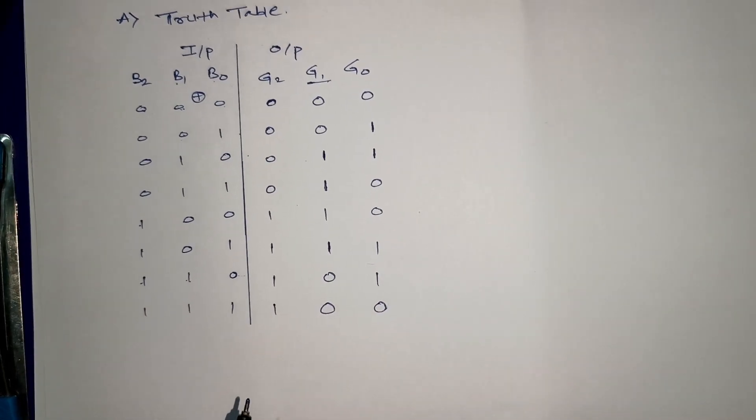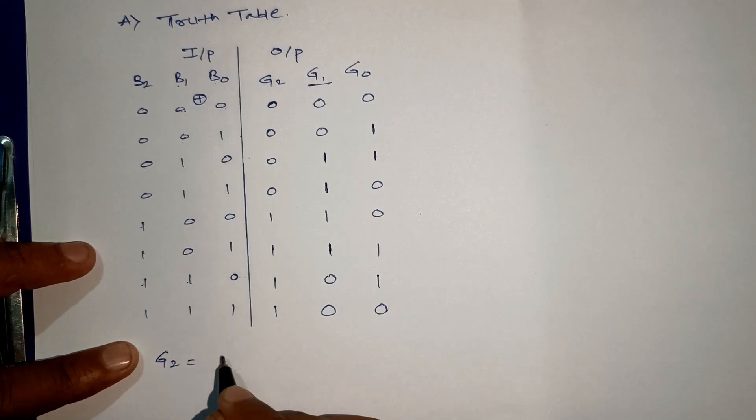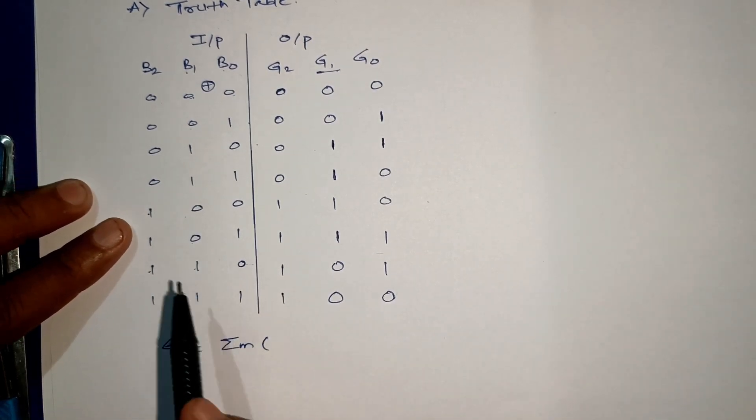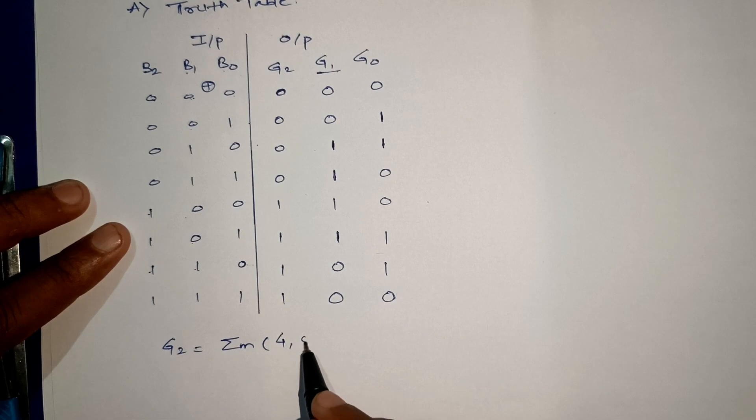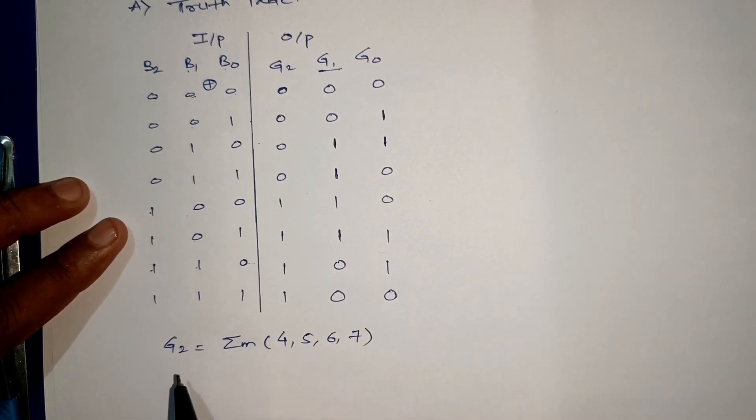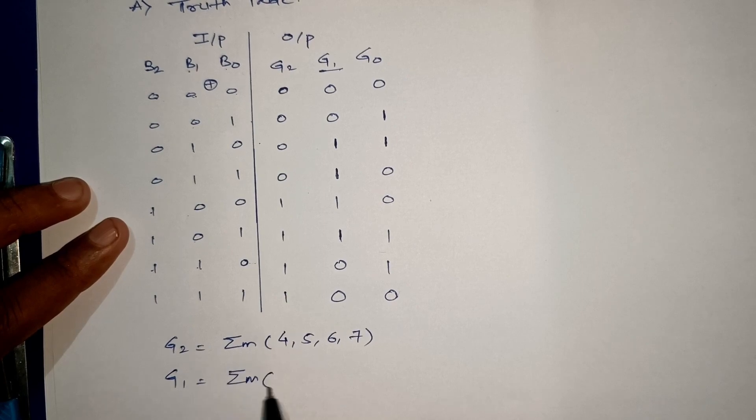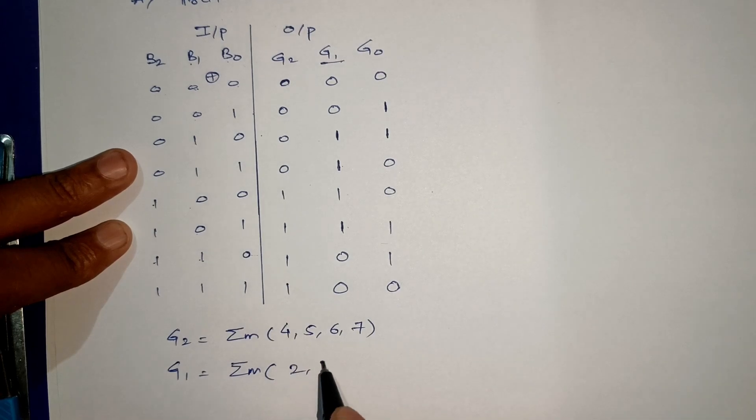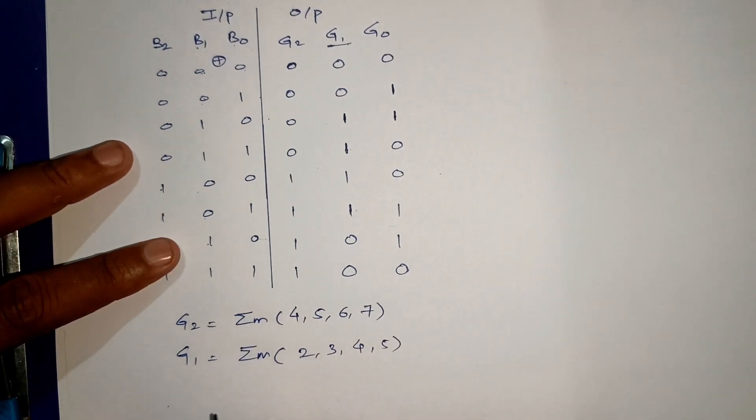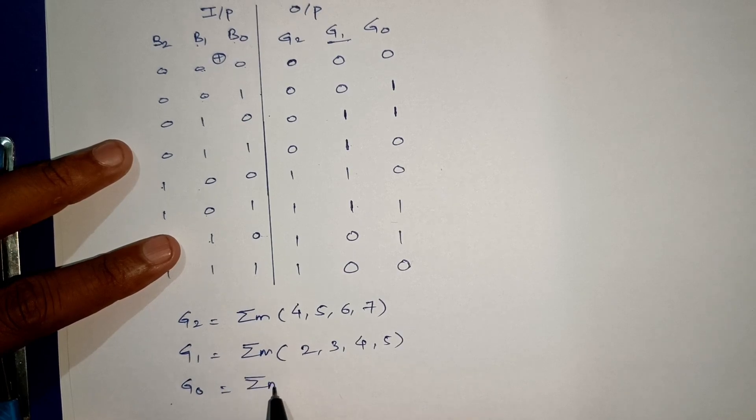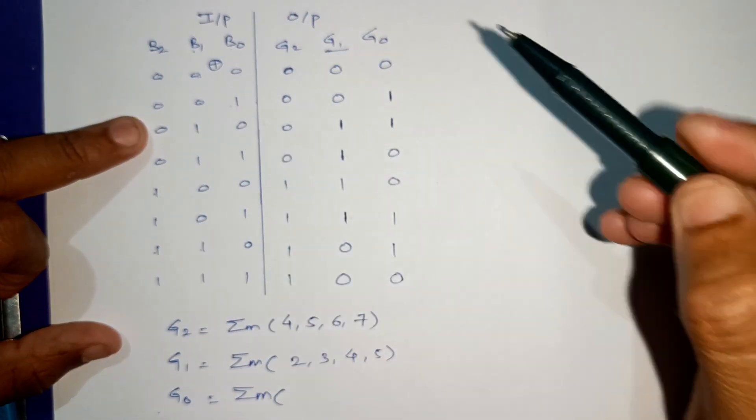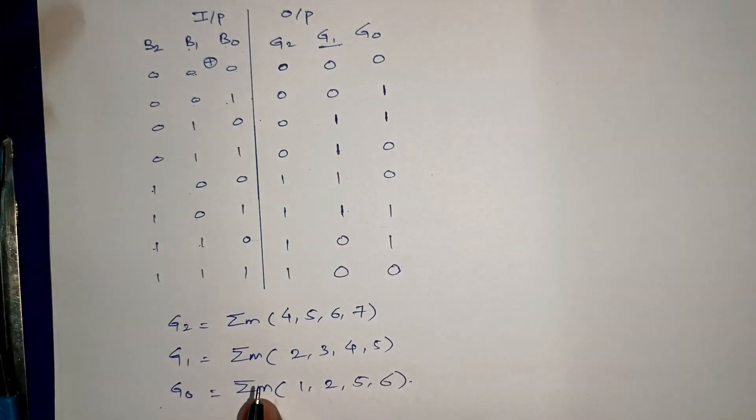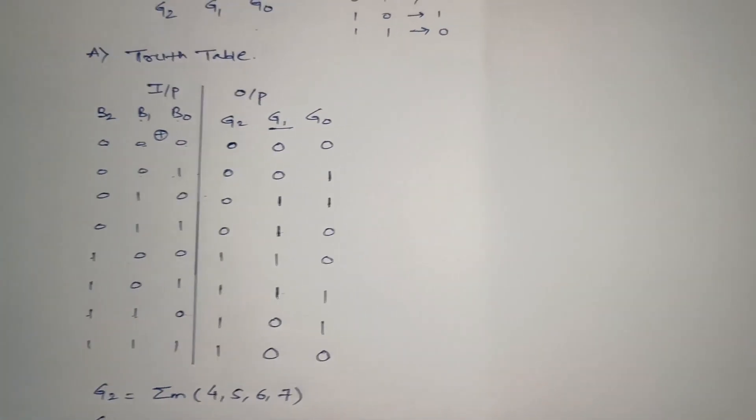Now let's go for its expression. G2 is 1 for combinations 4, 5, 6, 7. Similarly, G1 is 1 for 2, 3, 4, 5. And lastly, G0 is 1 for 1, 2, 5, and 6.